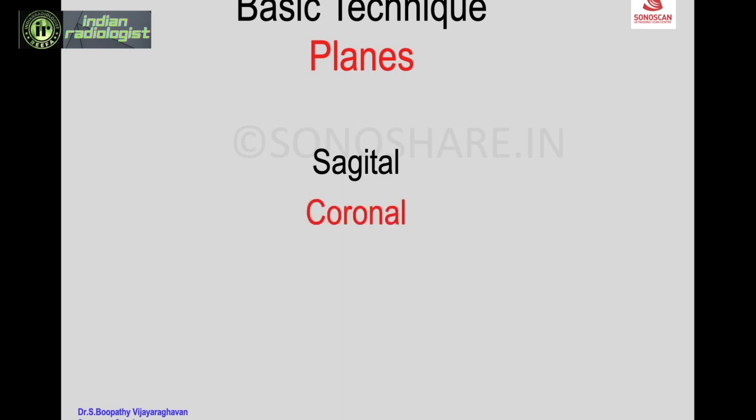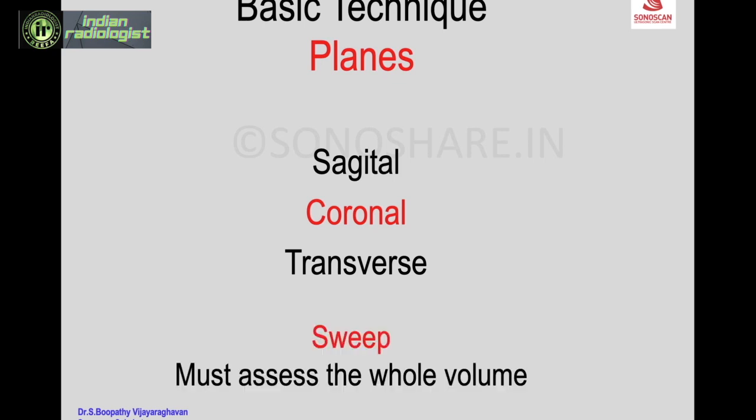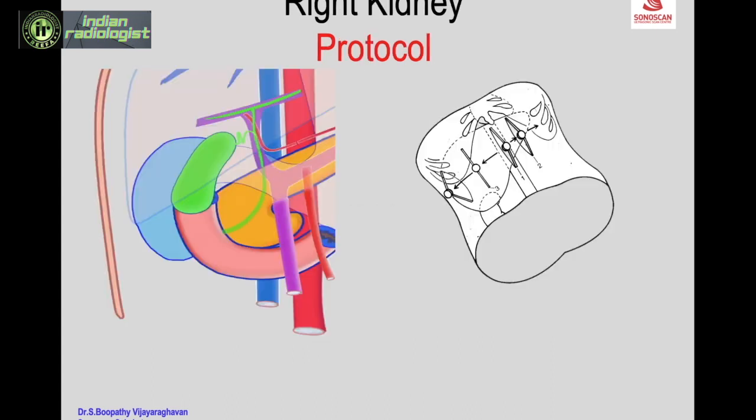The planes used are the sagittal, coronal, and transverse. The longitudinal scan is either sagittal or coronal, and then the transverse scan. A sagittal or coronal sweep and a transverse sweep must be performed to assess the whole volume of the kidney.